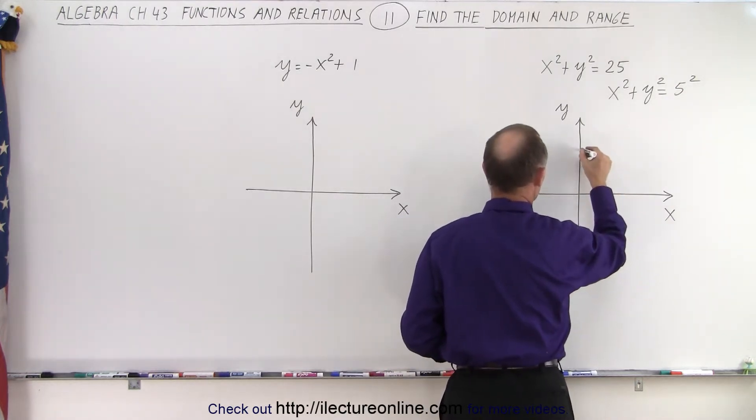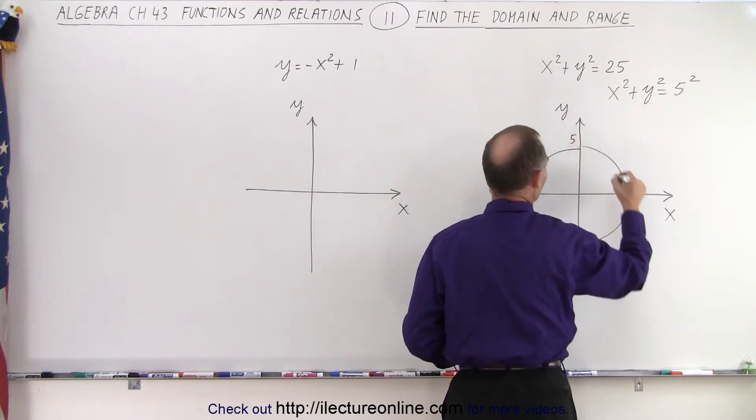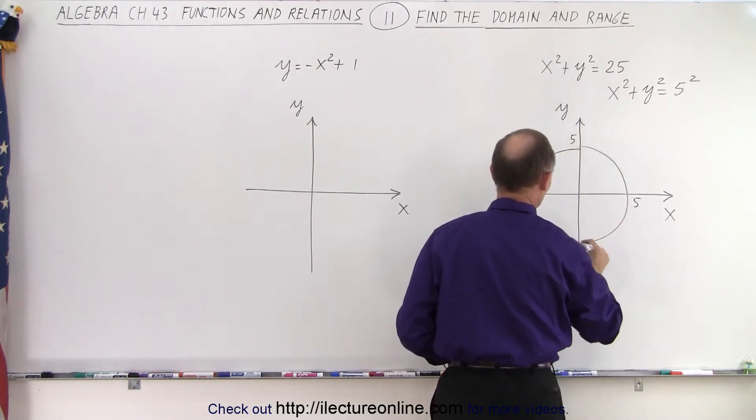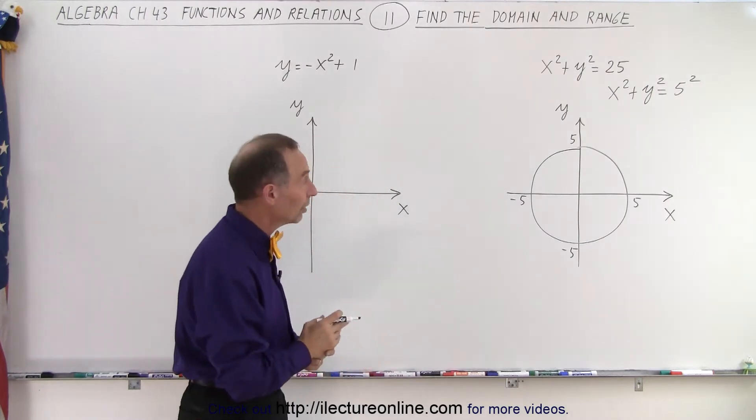So therefore we can go ahead and draw the circle on the xy plane. This is 5, 5, minus 5, and minus 5. So you can clearly see graphically what the limits are.